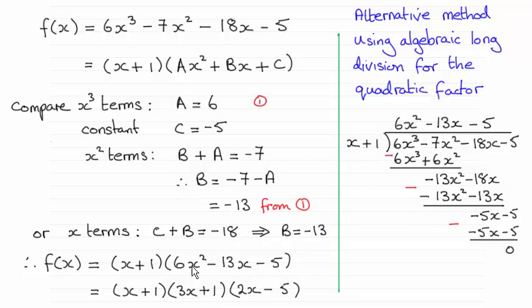So that's one way then you can get the quadratic factor. The other way then is to just simply divide (x + 1) into f(x), carry out algebraic long division, and you can see you get 6x² - 13x - 5.